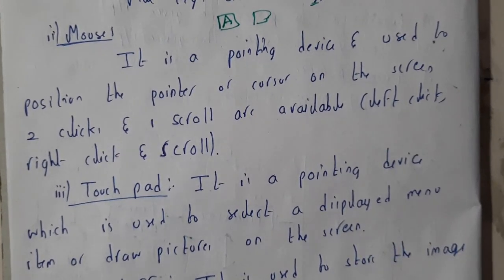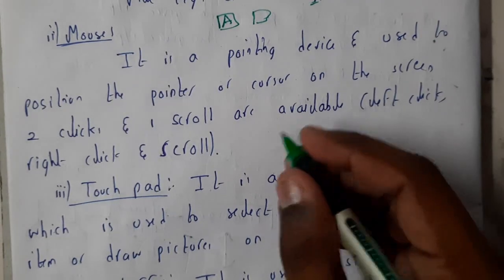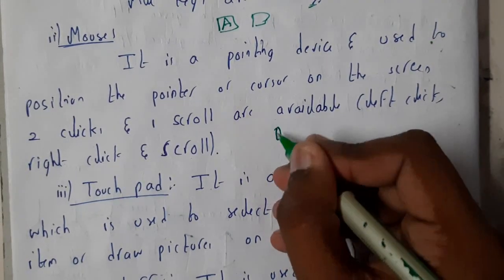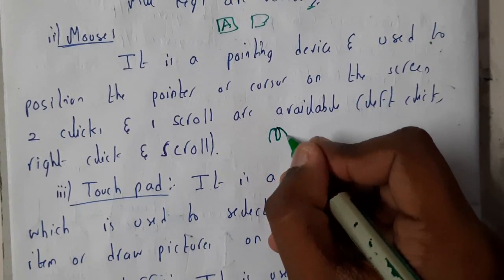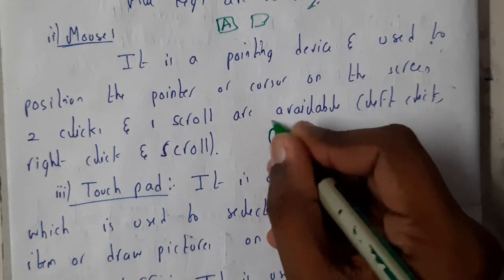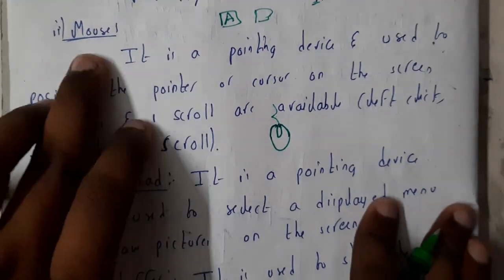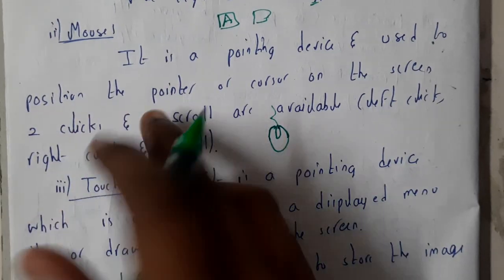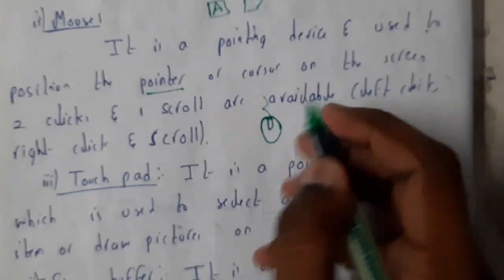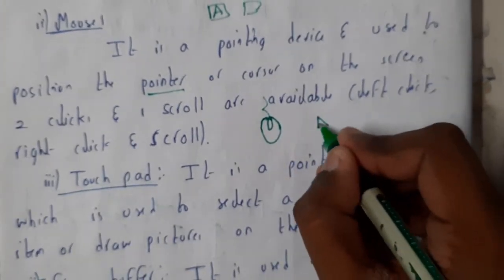Further moving on, mouse. I hope everyone knows mouse. It is having a central roller and a right side and a left button. It will be in this way with a cable or wireless according to your wish. It is a pointing device and used to position the pointer. Why you will be using this? You will be having a cursor, so it will be in this way.